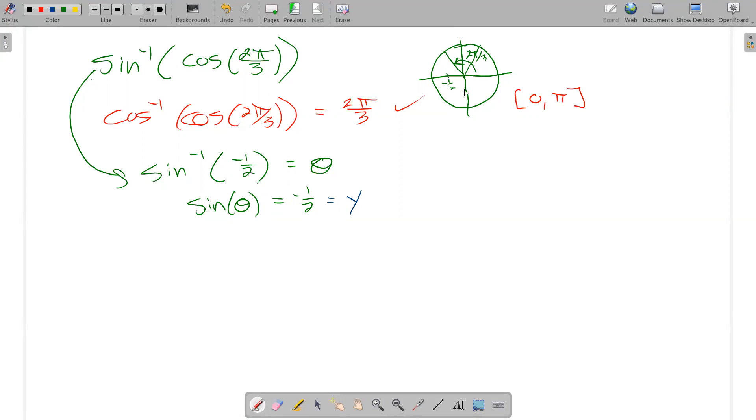So, now I think about y equals negative 1 half, which would be over here, and there are a couple of points associated with that, right? There's this point over here, and there's that point over there.